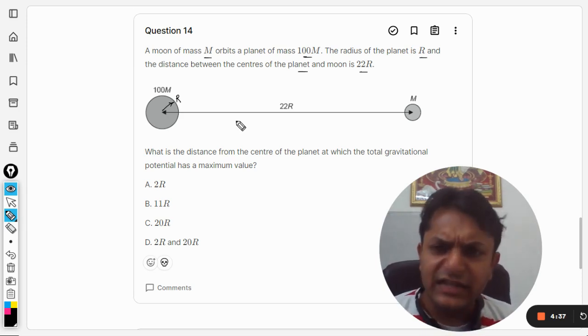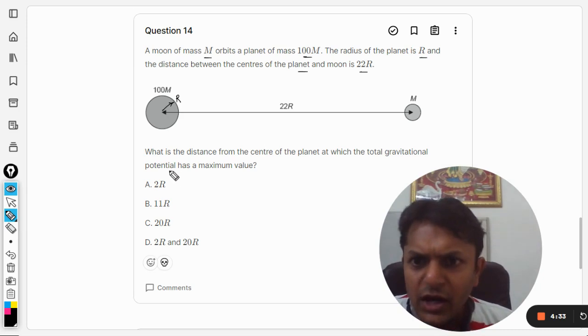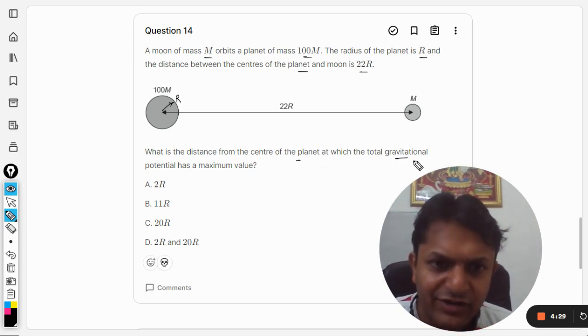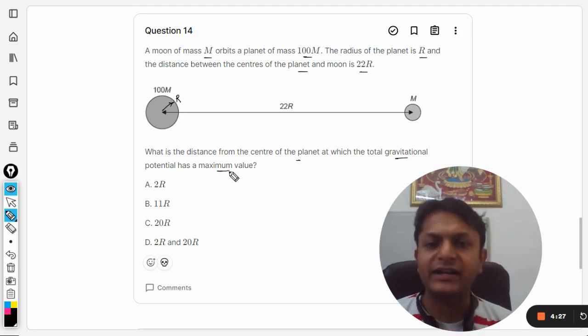The radius of the planet is given but that will not be required, I believe. Anyways, what is the distance from the center of the planet at which the gravitational potential has a maximum value?